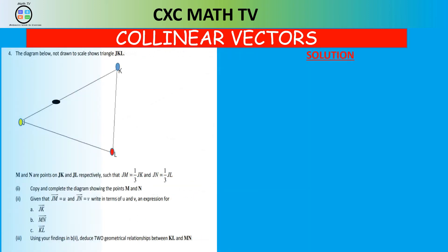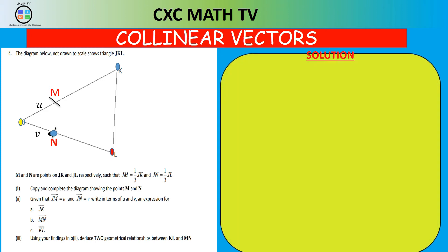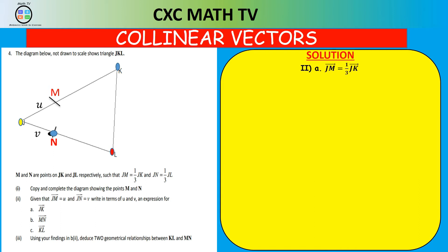First, we place M one third along JK and N one third along JL. Since JM = (1/3)JK, vector JK = 3 × JM = 3u. The line JK is divided into three equal parts, each of length u, giving a total of 3u.